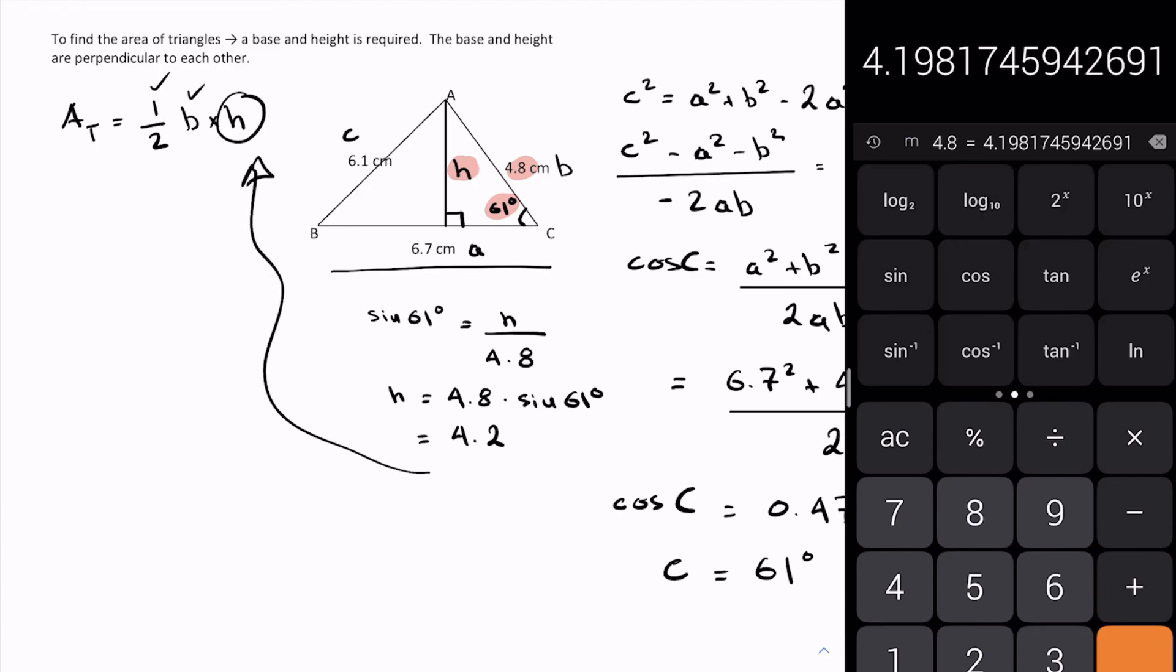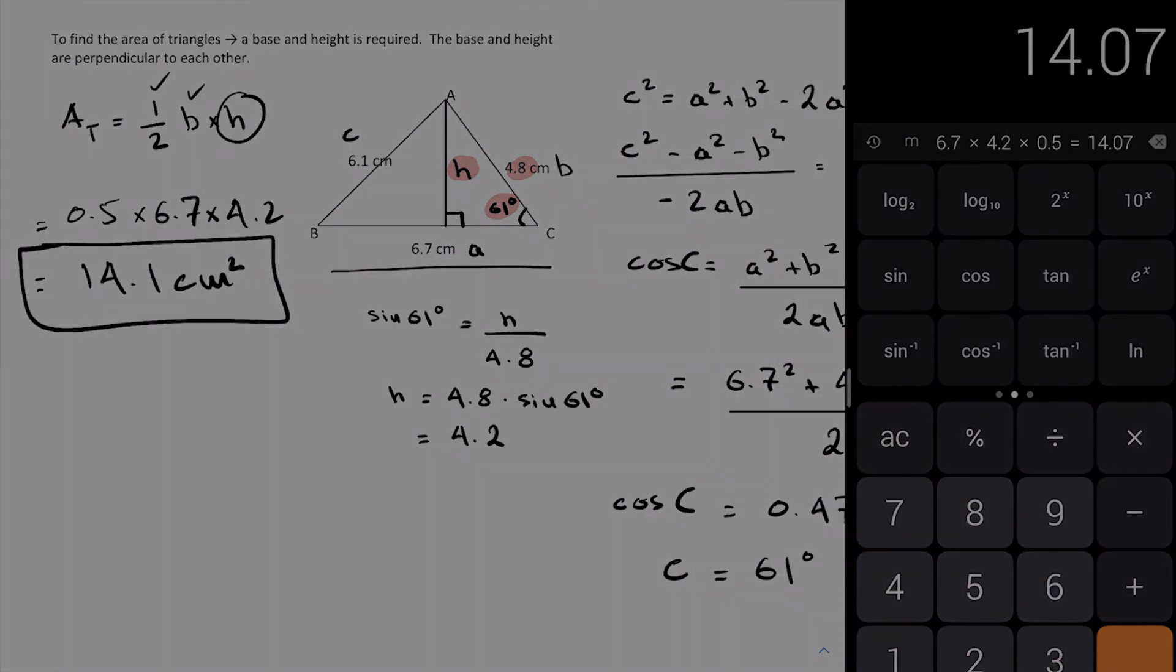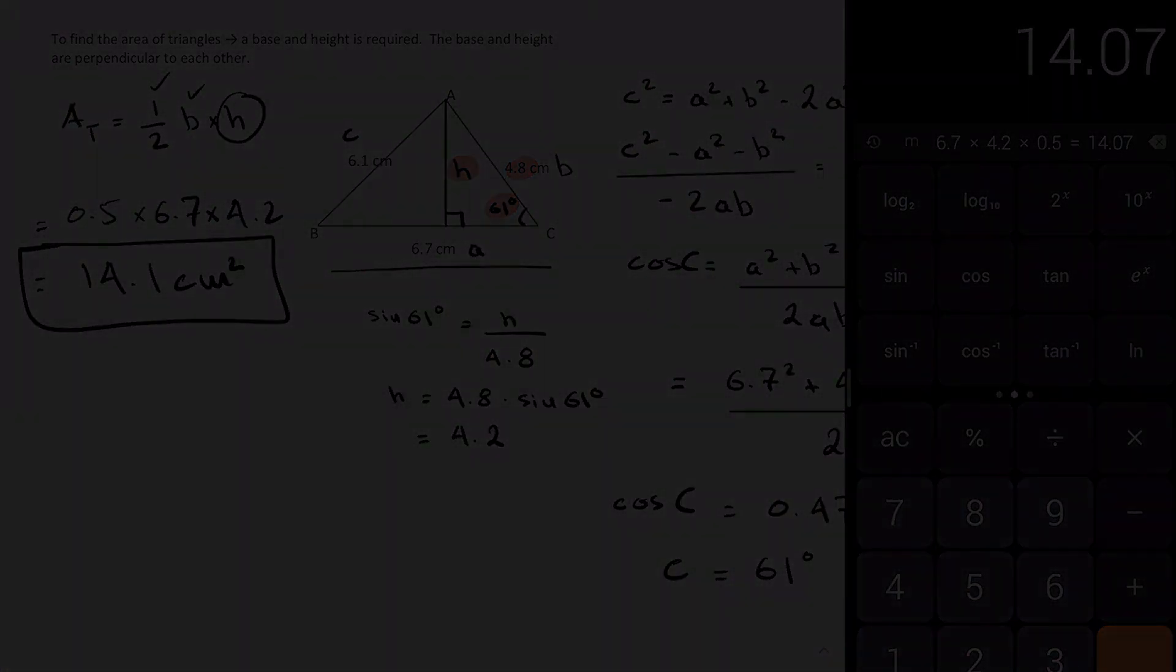I can go back to my work over here and plug in my values. So I have 0.5 which is my half times 6.7 times 4.2. So what does that give us? Let's do 6.7 times 4.2 times 0.5. 14.1 centimeters squared. That's going to give me my area and we're done.